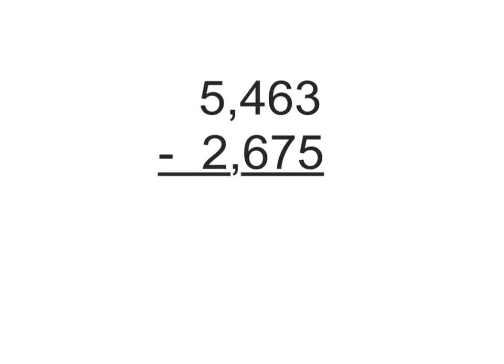First off, I want to take away 5 from a 3, and I can't quite do that, so I need to ungroup the 10s. So I currently have 6,10s, so if I take one of those 10s, that's going to leave me 5,10s.